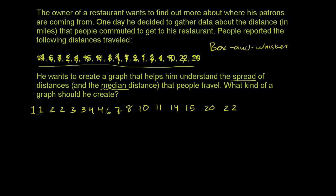The median is the middle number. We have 17 numbers, which is an odd count, so the median will actually be one of these numbers — the one where 8 are larger and 8 are smaller. Counting 8 from the bottom gives us the 9th number. That 9th number is 6, and counting 8 from the top confirms 8 are larger than 6. So 6 is our median. With an odd number of data points you simply take the middle one; with an even number you'd average the two middle values.